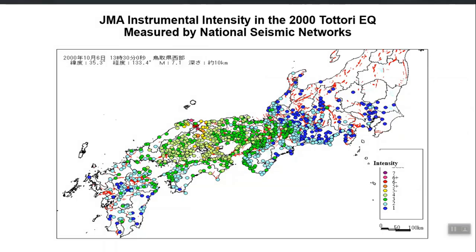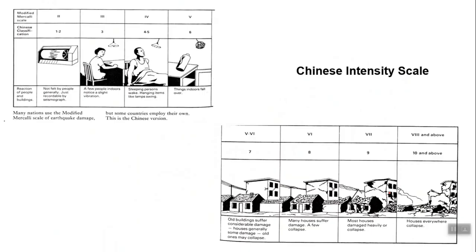The intensity is shown by different colors on the GMA scale — from 1 to 7 the color shows the number. The Chinese intensity scale even has pictures of damage showing what each level means: 1 to 2, what 3 means, 4 to 5, 6, 7, 8, 9 — and 10 will be complete destruction.